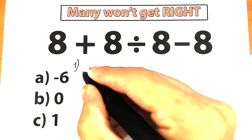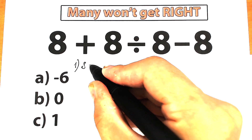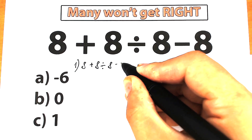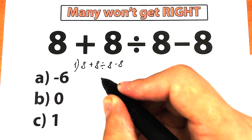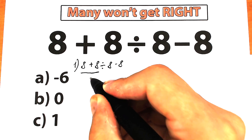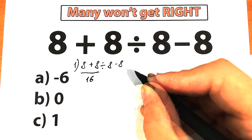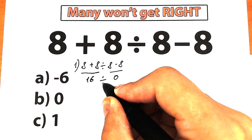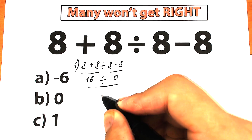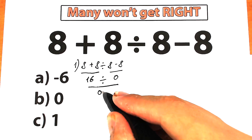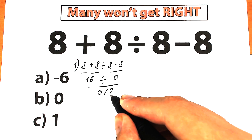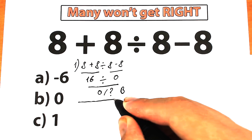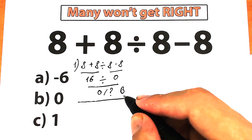So first of all I want to start with this first interpretation. We have 8 plus 8 dividing by 8 minus 8. A lot of students solve these challenges like that — they say 8 plus 8 equals 16, 8 minus 8 equals 0, then divide 16 by 0. One part of students say that it's 0, another part say it's undefined. It looks like Option B, and they go on thinking that's the correct answer.